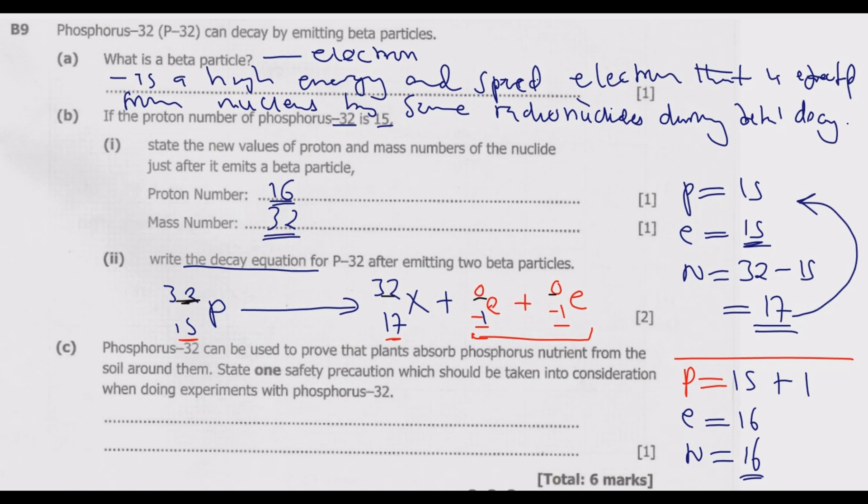What needs to be done is: do not look into the container of phosphorus-32 without shielding. Number two: do not work over open container that contains phosphorus-32 without shielding.